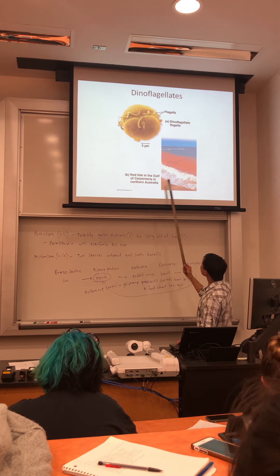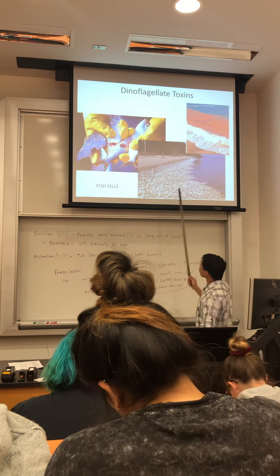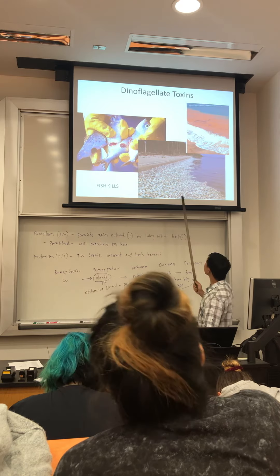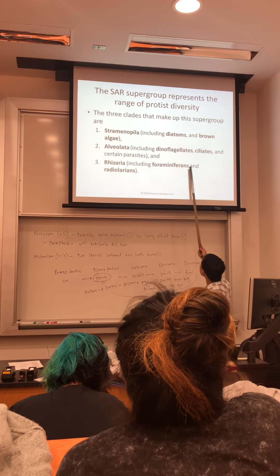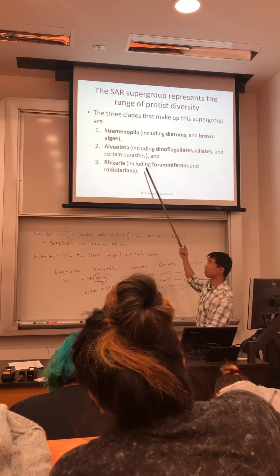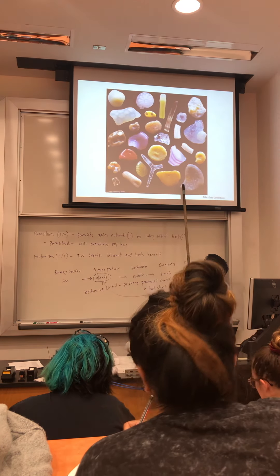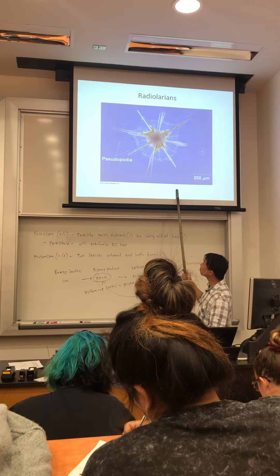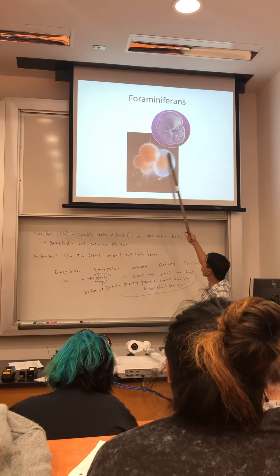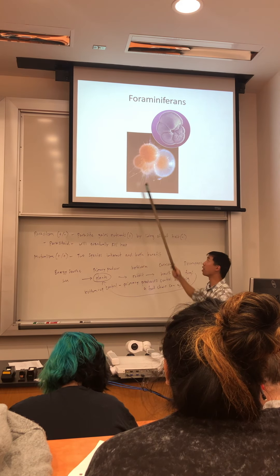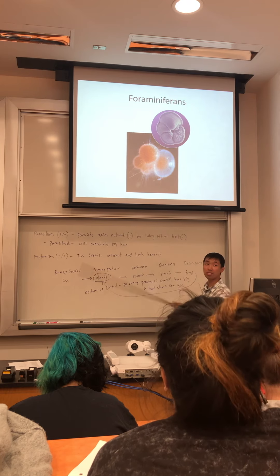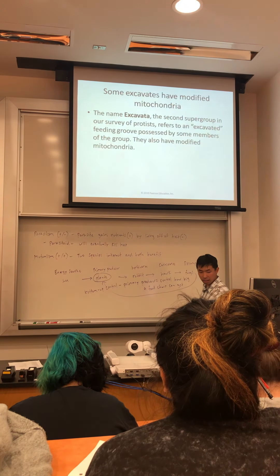Alveolates: we have the dinoflagellates, and these are the guys that also live inside the corals that I talked about, and we also have the things that cause malaria. Rhizarians include the forams and the radiolarians. These are the guys that have this kind of a multi-chambered shell with their little pseudopodia coming out.